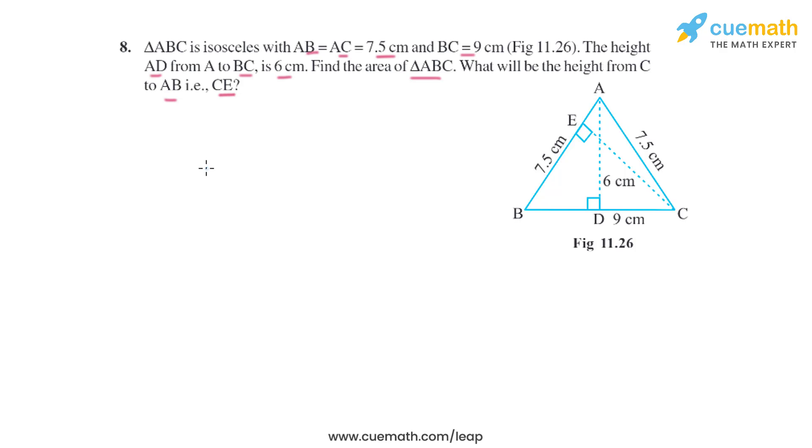So first what we have to do, we have to take the base as BC and the height as AD. We have to find the area of triangle. Then we know the area of triangle, we can take the base AB and height CE. So from there we can find the value of CE.